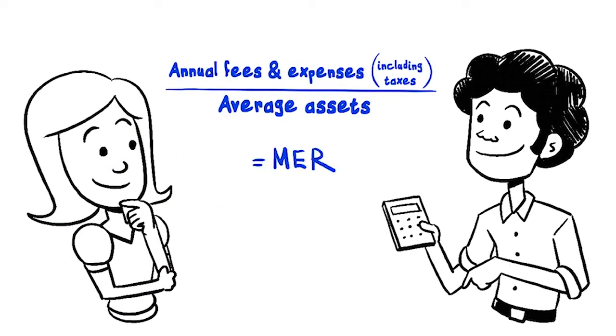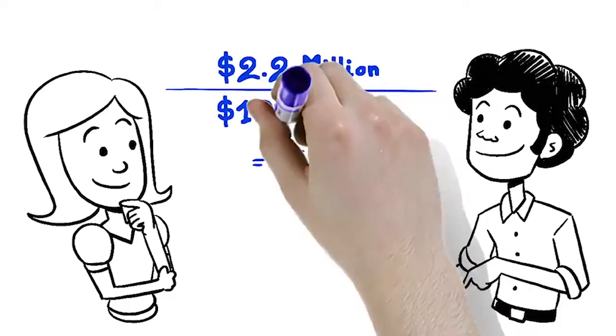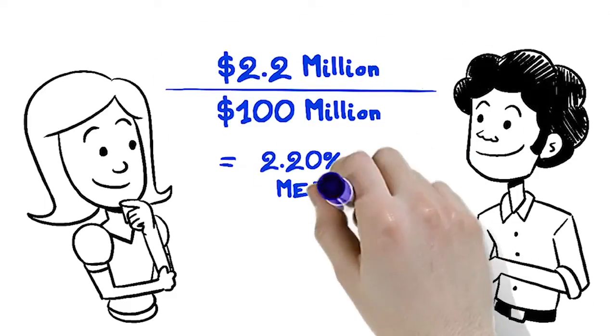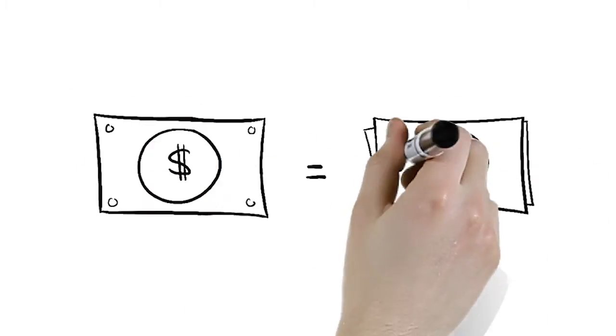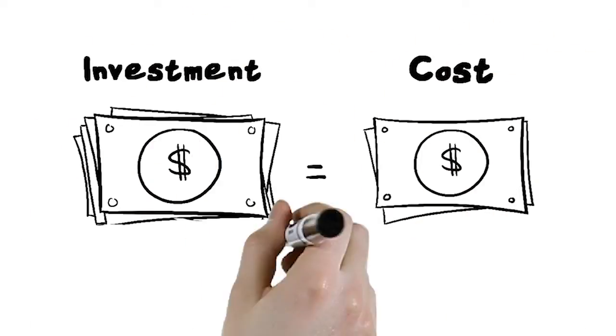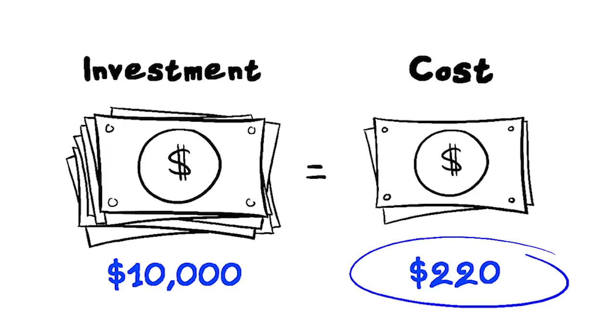The mutual fund that Paul and Lisa chose to invest in has an MER of 2.2%. In this situation, the cost for a given year for Paul and Lisa's $10,000 investment is $220. Let's look at how that money is put to work for them.